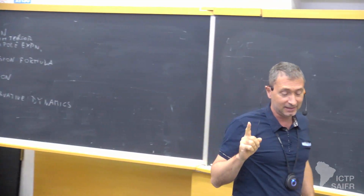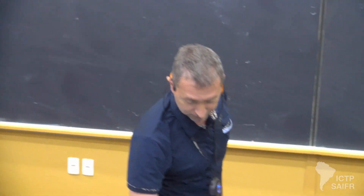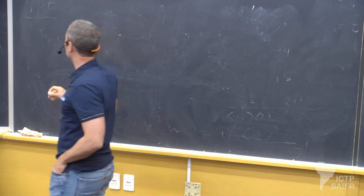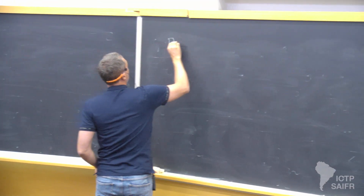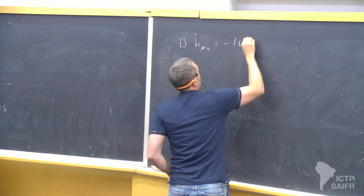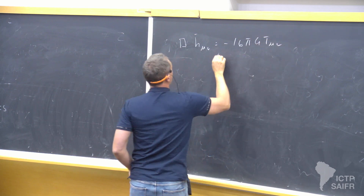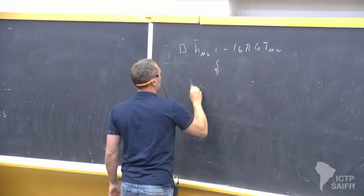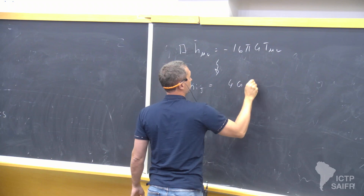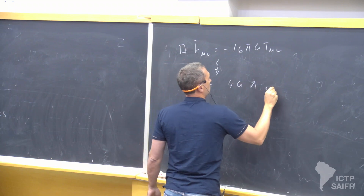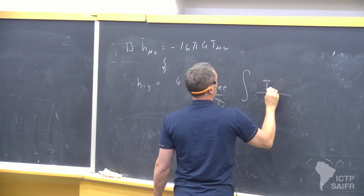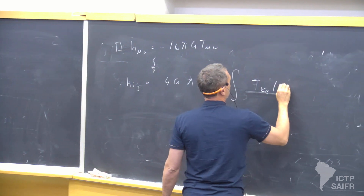So yesterday I announced something about Green functions. Let me just catch it, and then we can discuss about it more in the exercise session. So we got to this equation of motion, minus 16 pi G T mu nu. And then we massaged it a little bit, and we got to this solution: minus 4G lambda ijkl integral over 1 over the distance, T_kl retarded.